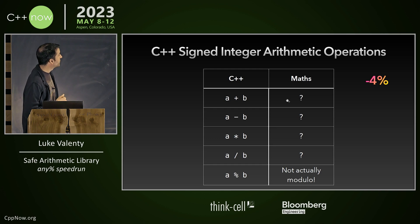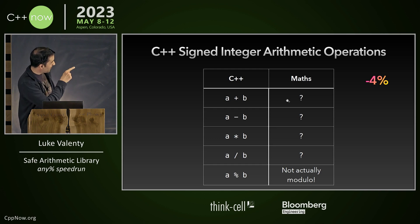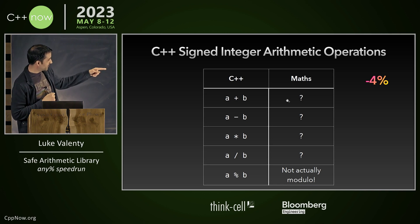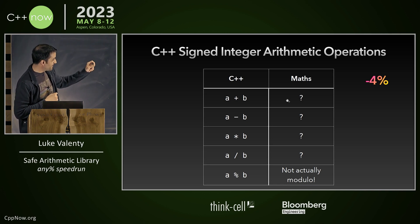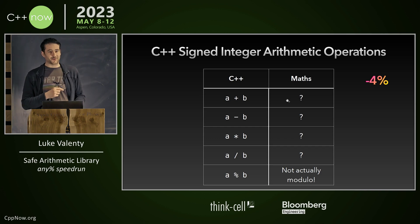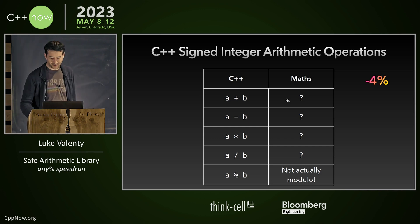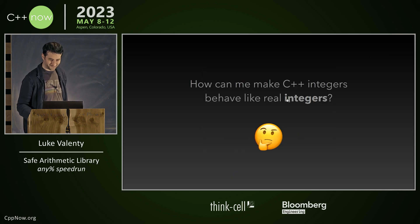The signed integer operations are even worse. Division can actually overflow with negative values, and modulo is not the correct mathematical modulo, which is really annoying to discover.